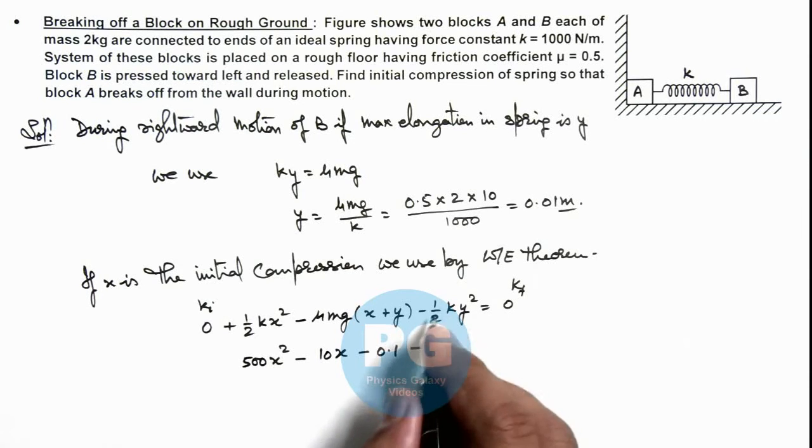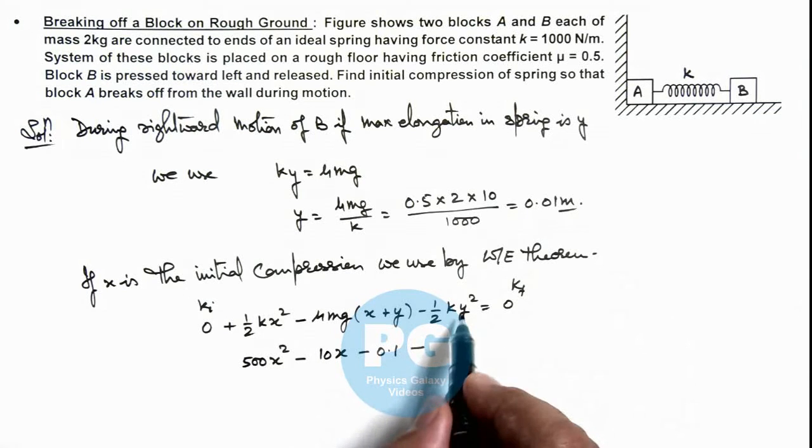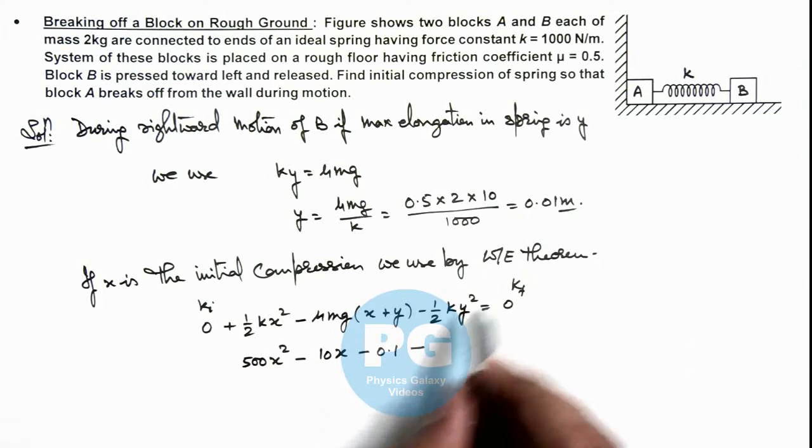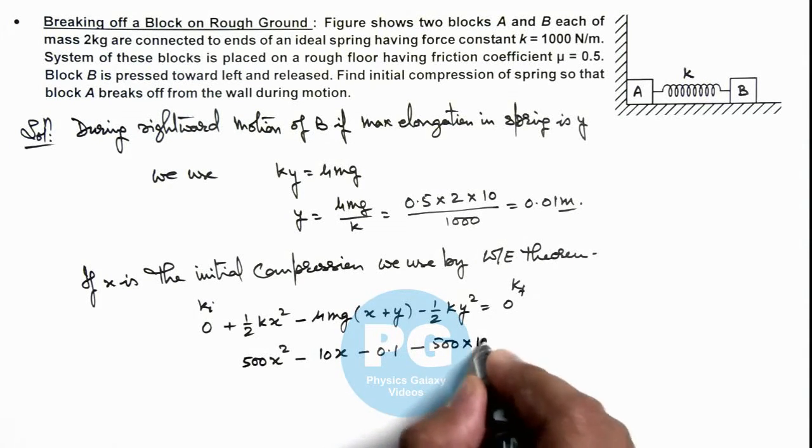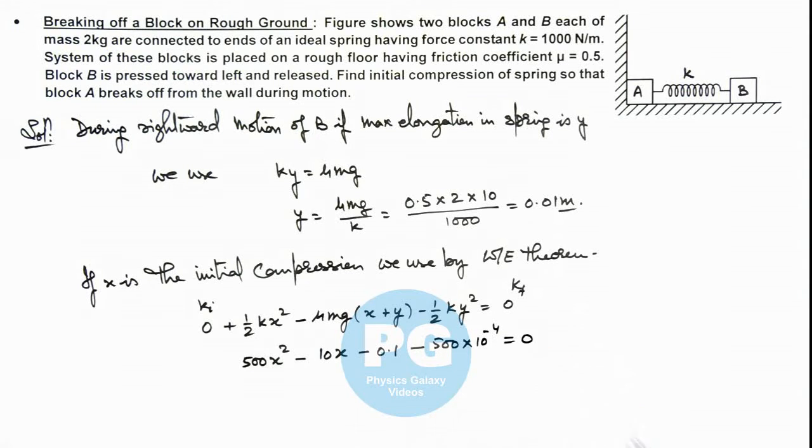Minus half ky squared, so here the value of y is 0.01, so this can be written as 500 multiplied by 10 to power minus 4. This is equal to zero. So in this situation this will be minus 0.15.